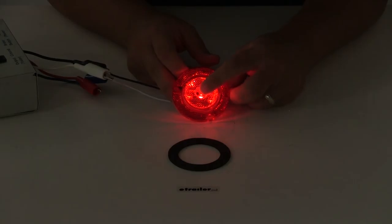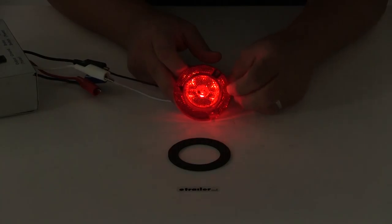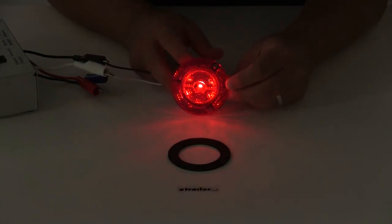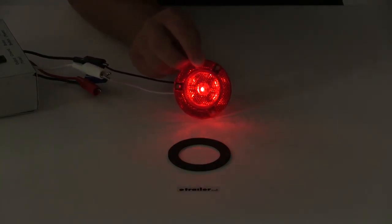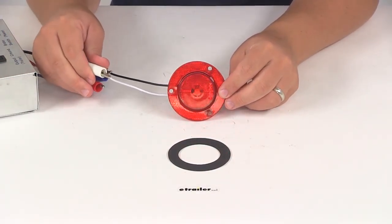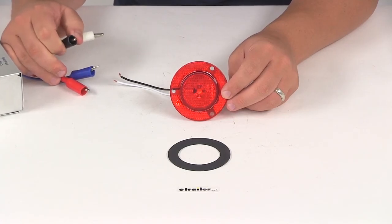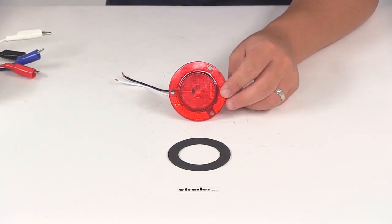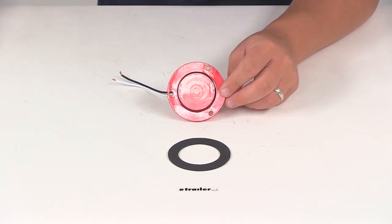There's one main LED with six other LEDs surrounding it. That does it for today's review of part number MCL52RHXB, the Optronics LED clearance or side marker light.